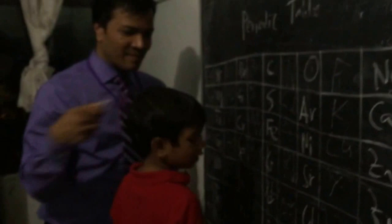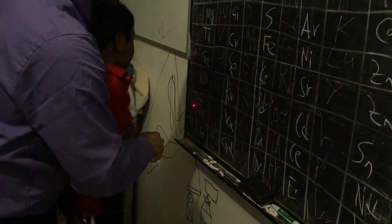Ruthenium, rhodium, palladium, silver, cadmium, indium, tin, antimony — where are you? Tellurium — where are you? Iodine — where are you? Xenon, cesium.